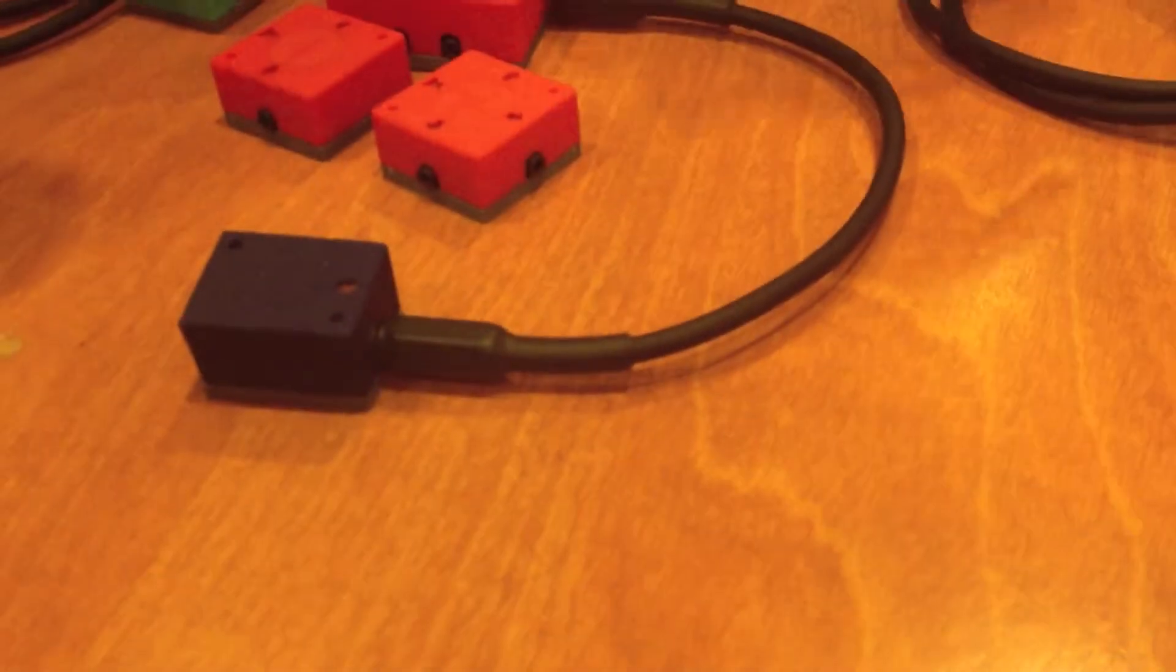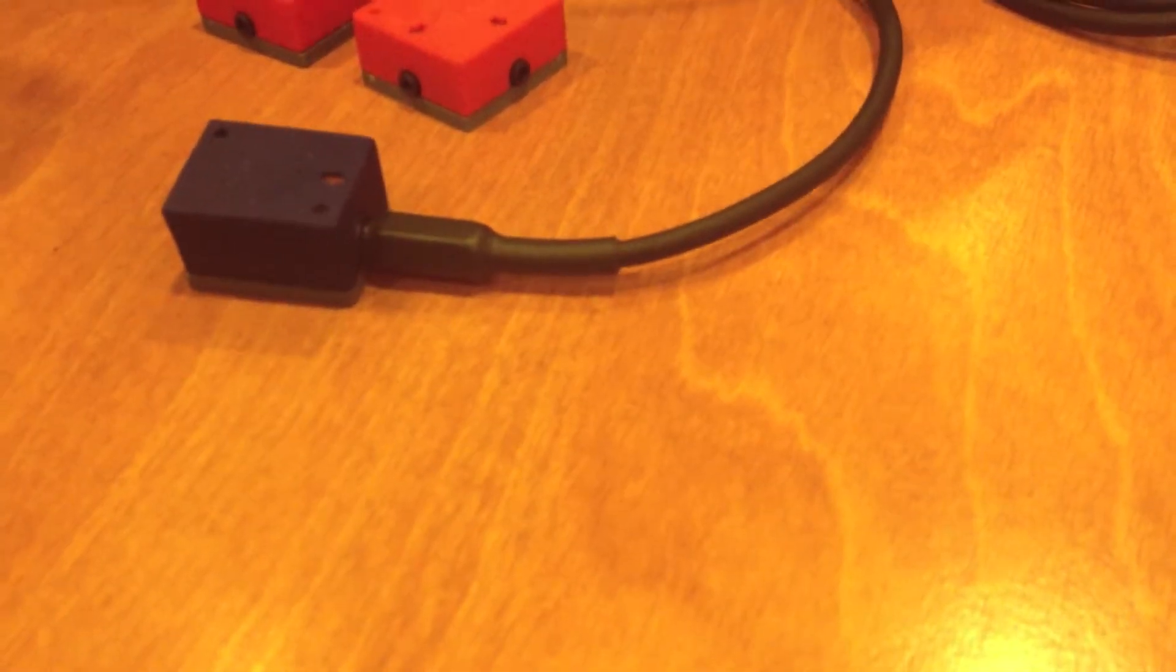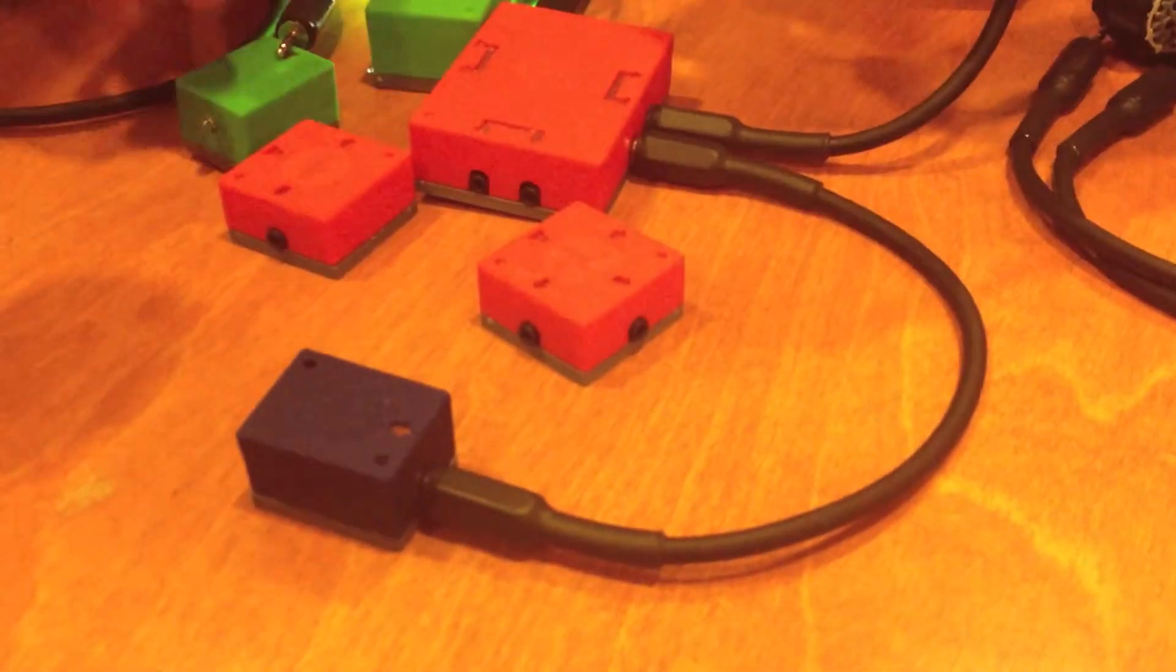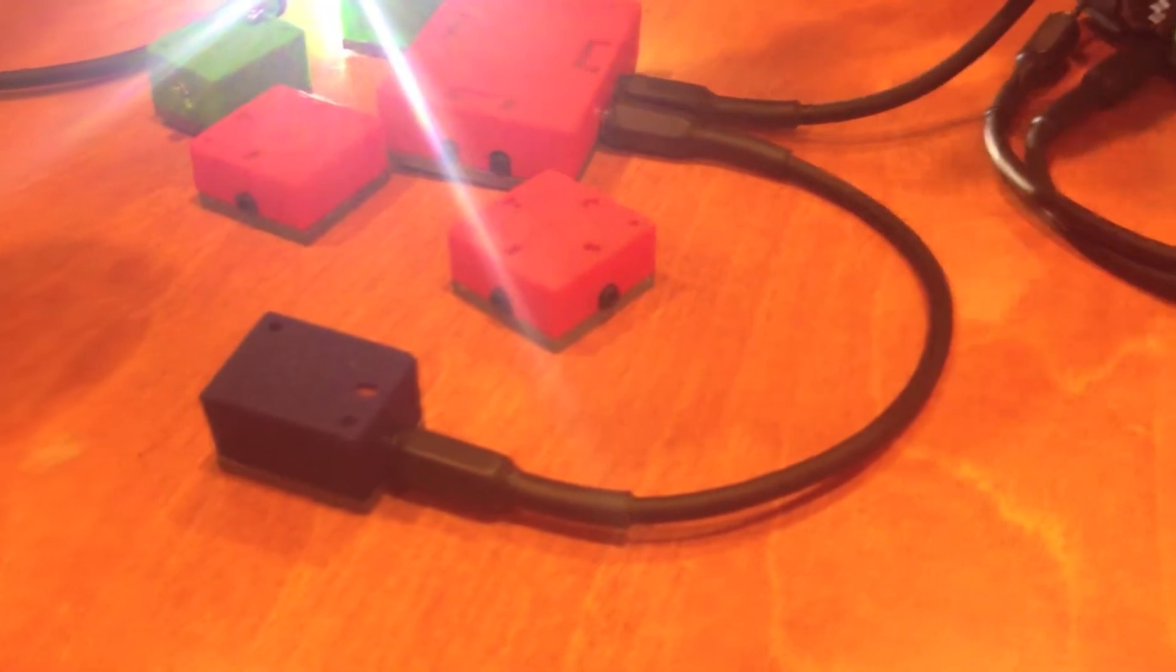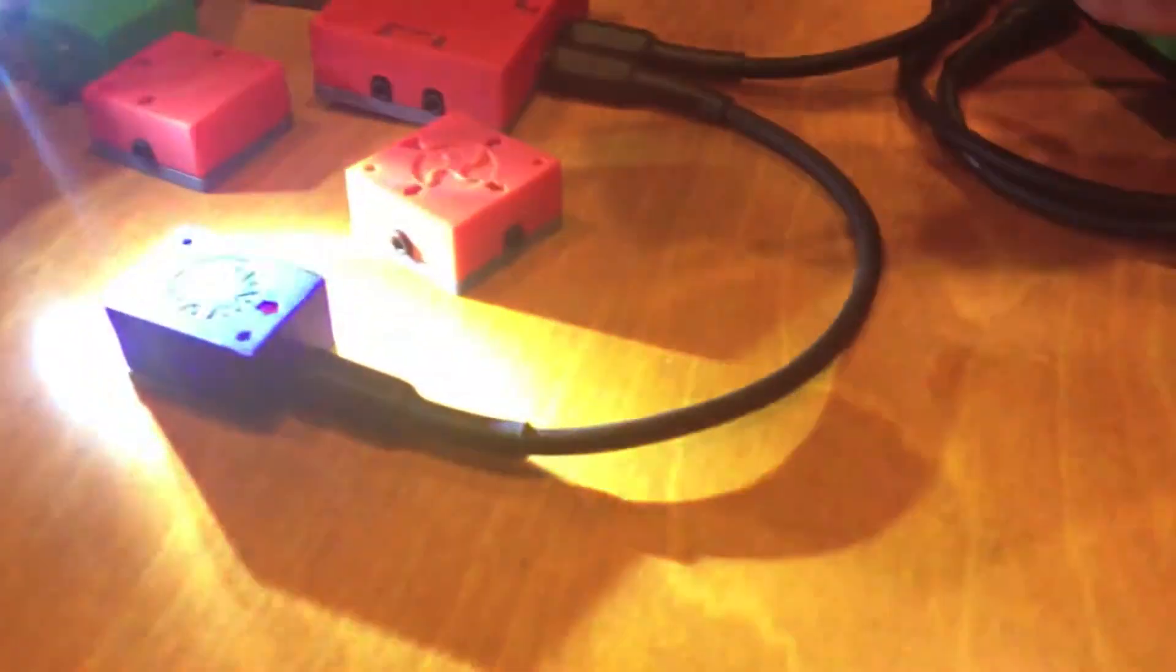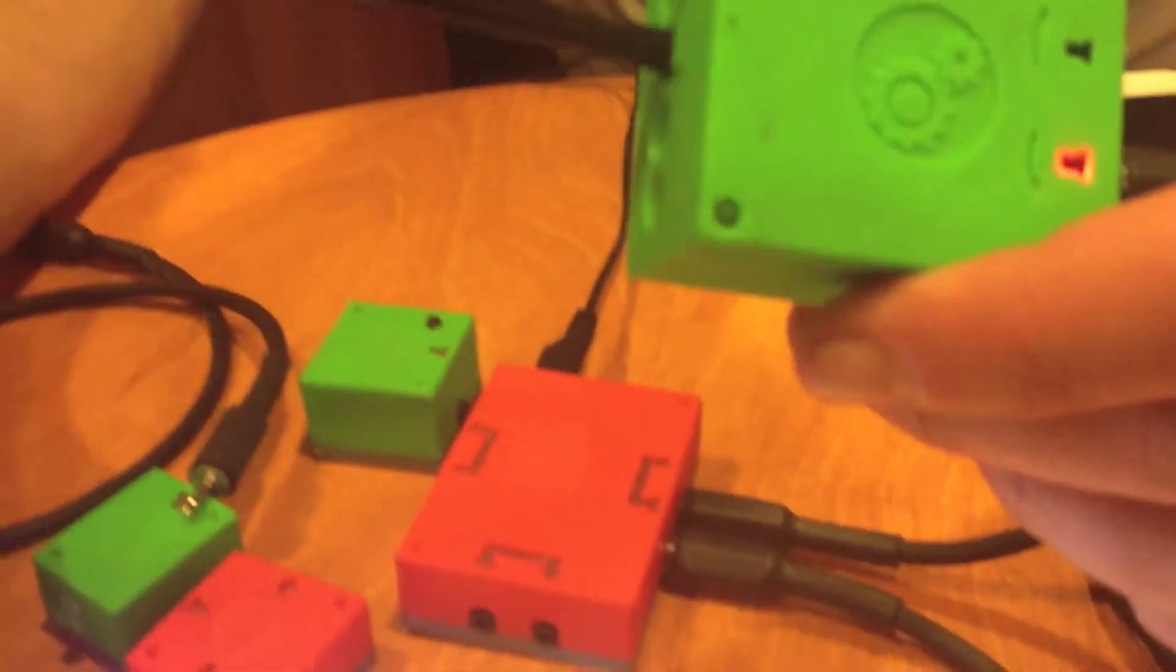And it pushes that signal through the battery brick into one of the green atoms. So if I plug that into the motor and then I have an output shaft so you can kind of see what's going on. And the more light it gets, the faster the motor goes.